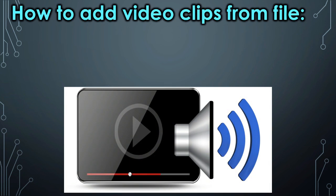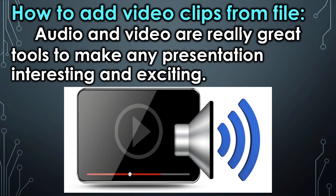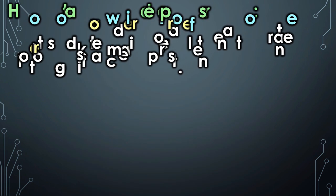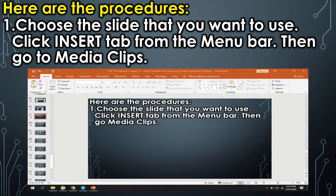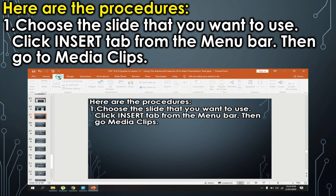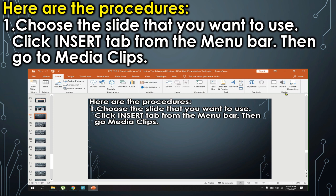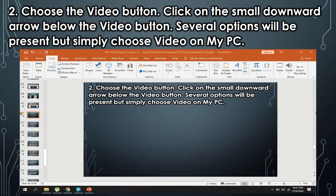How to add video clips from file. Audio and video are really great tools to make any presentation interesting and exciting. Here are the procedures. Choose the slide that you want to use. Click the Insert tab from the menu bar, then go to Media Clips. Choose the video button, click on the small downward arrow below the video button. Several options will be present, but simply choose Video on My PC.